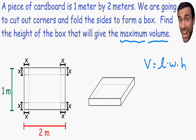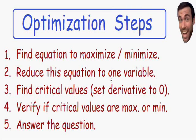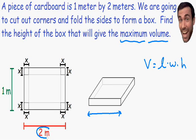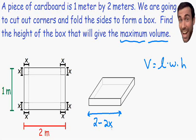Step number 2 says to reduce this equation to one variable. Our volume equation has three variables: L, W, and H. Let's find the length of the box after cutting out the corners. Before cutting, the length of the cardboard is 2 meters. After cutting we remove two pieces each of length x, so the length is equal to 2 minus 2x.